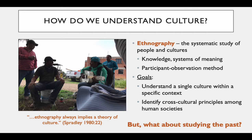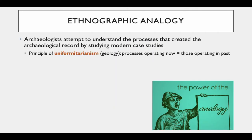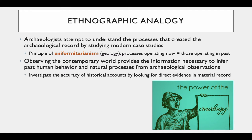But what about studying the past? Archaeologists use a method called ethnographic analogy to understand the processes that created the archaeological record by studying modern case studies or those of the ethnographic present. To accomplish this, we adapted the principle of uniformitarianism from geology, which asserts that the processes now operating to modify the earth's surface are the same processes that operated throughout geological time. Archaeologists recover the physical remains of past human behavior and, like geologists, must look to the contemporary world for hypotheses that account for the formation and deposition of those physical remains. Observing the contemporary world provides the information necessary to infer past human behavior and natural processes from archaeological observations. This method can also be used to investigate the accuracy of historical accounts by looking for direct evidence of certain behaviors within the archaeological record.